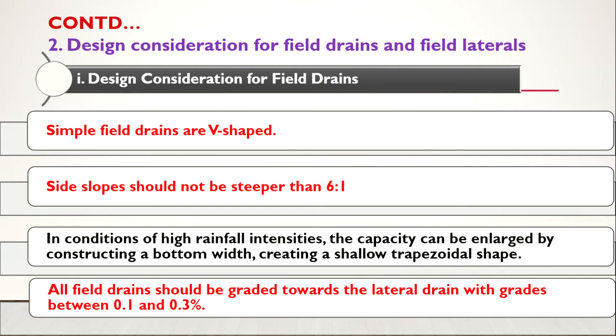Field drains are the smaller ones and field laterals are bigger, because water from the field drains will be collected and discharged into the laterals. The slope of the field drain should be graded towards the lateral, with grades between 0.1 to 0.3 percent.